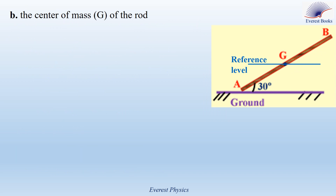Part B: the reference level is the horizontal plane passing through the center of mass of the rod. We notice that G belongs to the reference level, so its altitude is zero. Using GPE = M·G·Z_G, the gravitational potential energy of the rod relative to this reference level is 0.